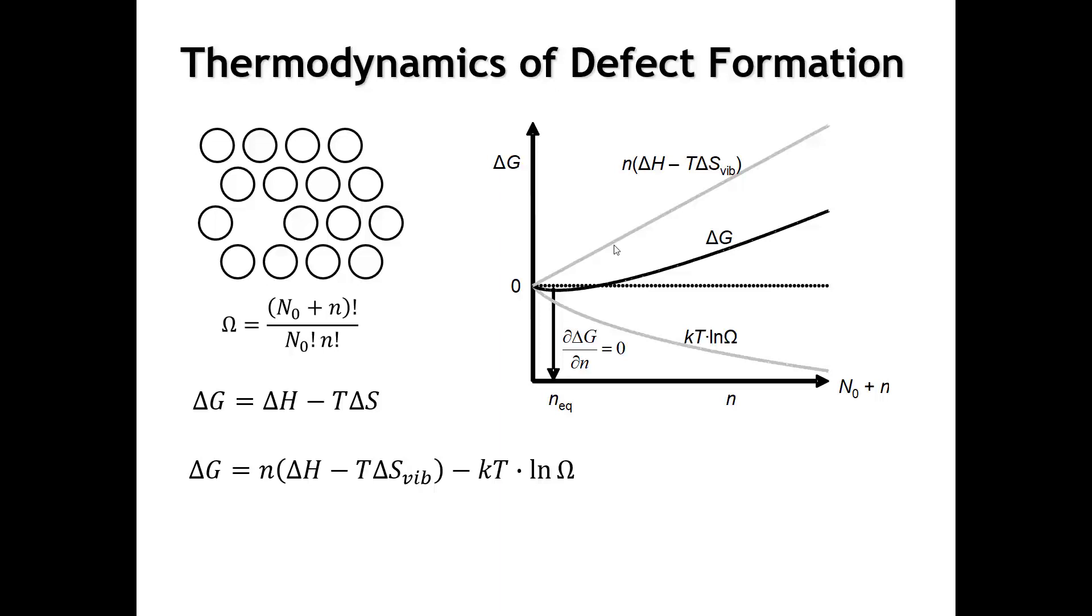At the same time, the configurational entropy is going to become more favorably negative as the number of defects increases. And so, the overall delta G of this process is a balance between these two competing things.